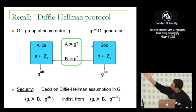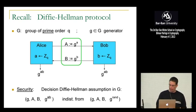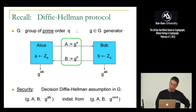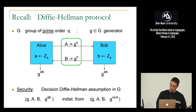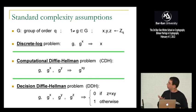The Diffie-Hellman protocol is done in a group G of prime order Q, with little g as a generator. Alice sends G^a, Bob sends G^b, and they get a shared secret G^{ab}. There's the standard Decision Diffie-Hellman assumption — DDH — which says that given G^a and G^b, the value G^{ab} is basically indistinguishable from random. If we operate in a regular group without pairings, there are standard complexity assumptions: the discrete log problem is hard (given G and G^x, hard to recover x), and the Computational Diffie-Hellman problem is hard (given G, G^x, G^y, hard to compute G^{xy}).